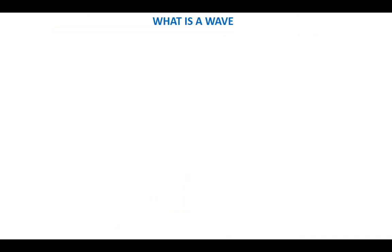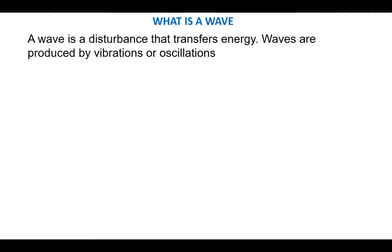Let's define what a wave is. A wave is simply any disturbance that transfers energy. Waves are produced by vibrations and oscillations, so where there are no vibrations or oscillations we don't expect to have a wave. A wave is simply just a disturbance that transfers energy.